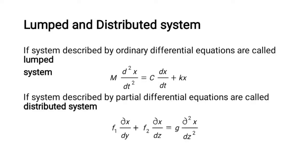For lumped and distributed parameter systems: if a system is described by ordinary differential equations, it is called a lumped system. If it is described by partial differential equations, it is called a distributed system. A partial differential equation arises when a variable x is a function of y and z simultaneously.